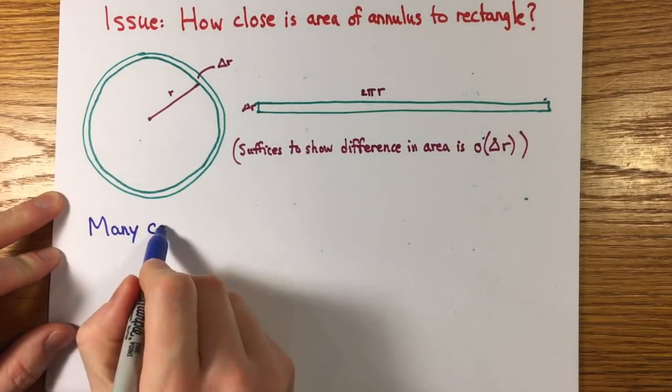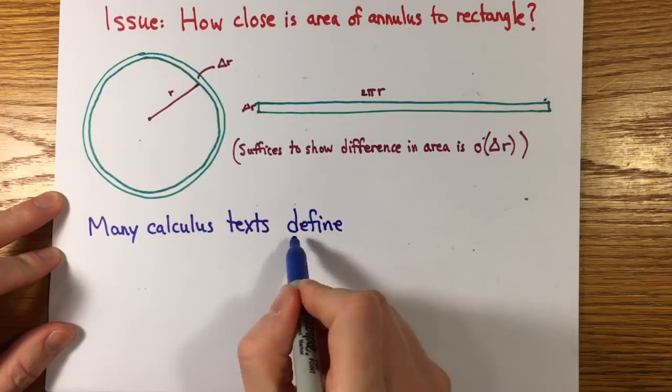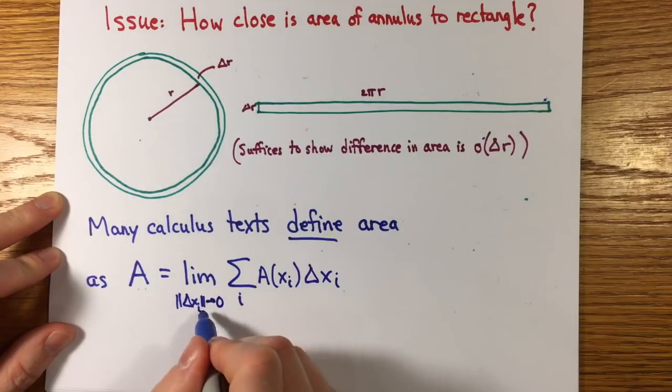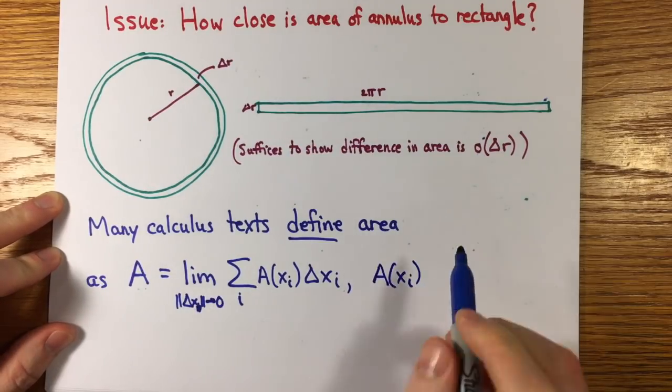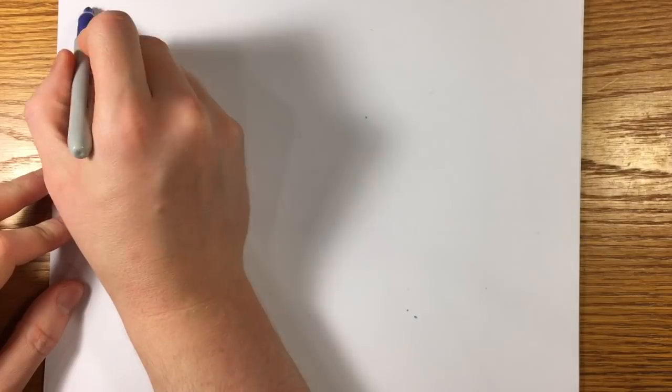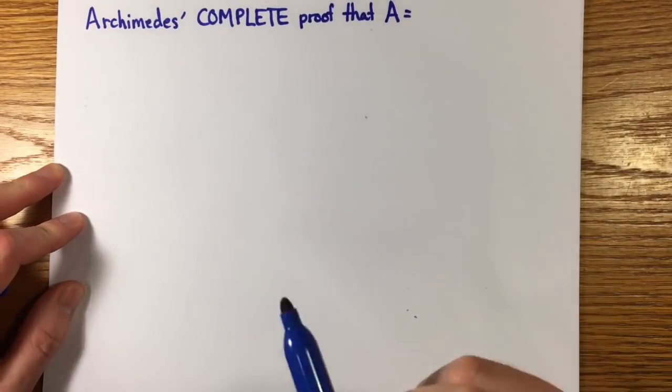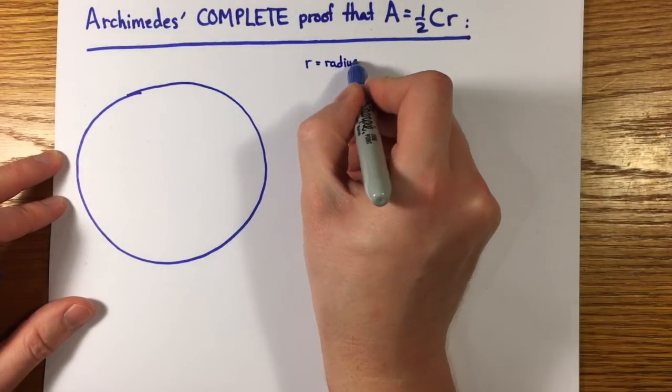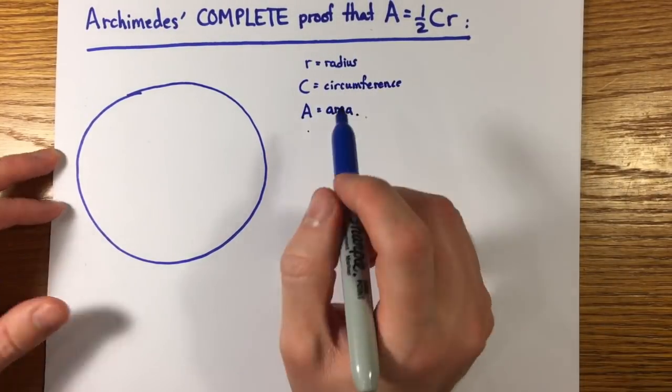In the modern treatment of calculus, it should be said that this issue is circumvented by defining the area of appropriate shapes to be given by the limit of such sums of areas of rectangles. Of course, if you do this, you're then beholden to prove that this notion of area satisfies the kinds of properties you want area to have, but I'm not going to go that route. I'm going to give a different proof, essentially equivalent to the one Archimedes actually gave. So, here's the proof that the area is one half cr.